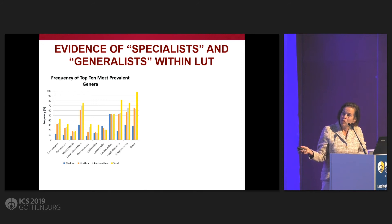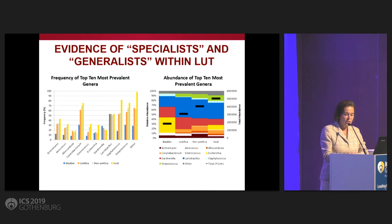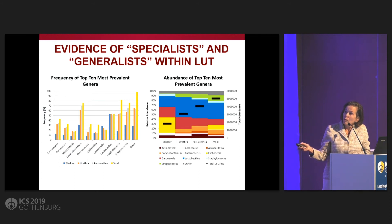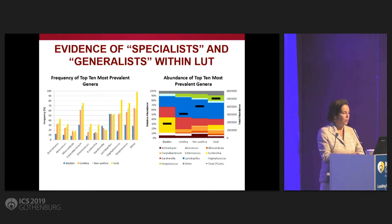You can see the lactobacillus population is relatively similar in all four specimens. Other non-contributors that aren't in the top ten are much more common in the voided specimen — in English, we have a word for this: we call it schmutz — so you don't exactly know what you're getting, and it can make it difficult to interpret. This shows the abundance of the top ten most prevalent genera in the bladder, urethra, periurethra, and voided. There is a distinct lactobacillus that lives in the bladder that is not a contaminant from the vagina.